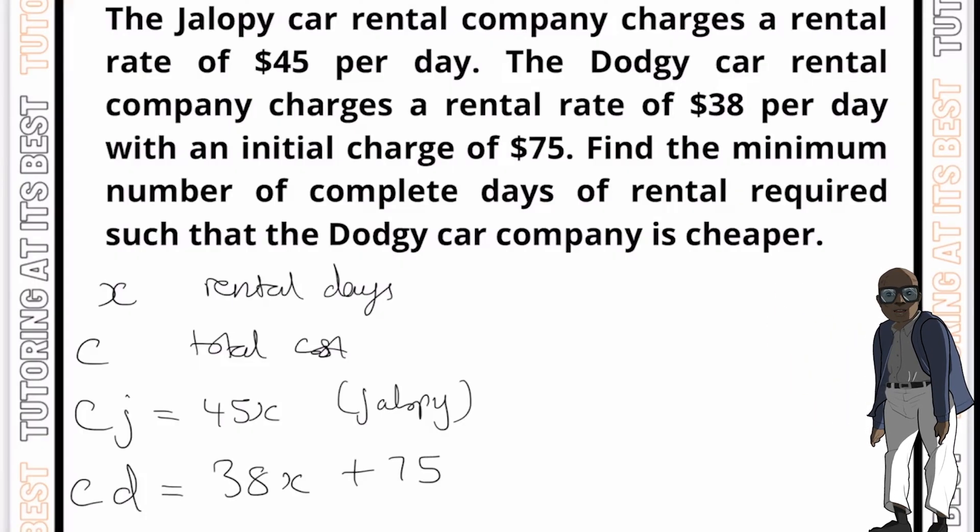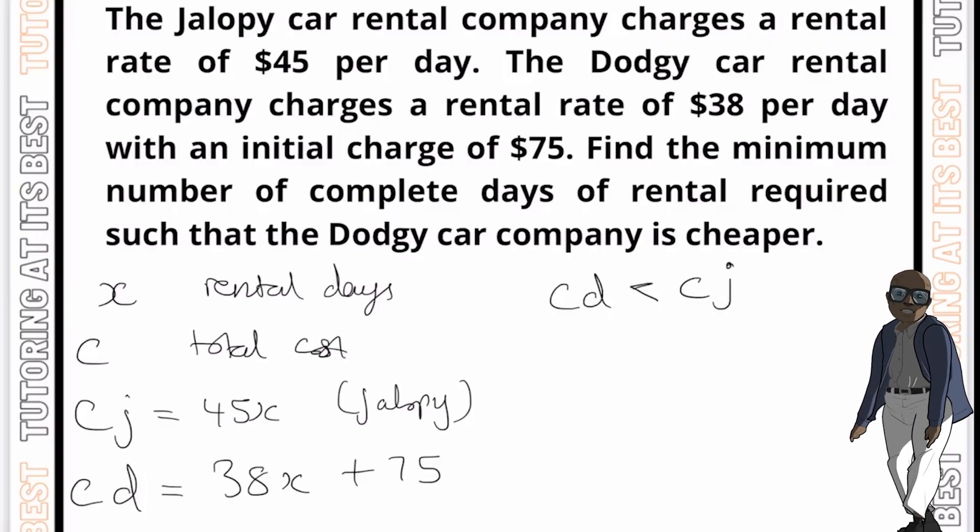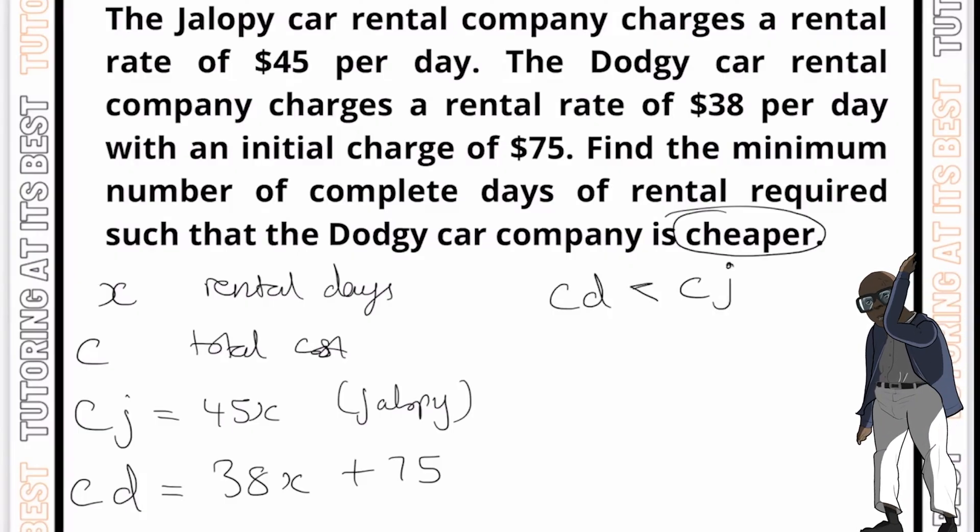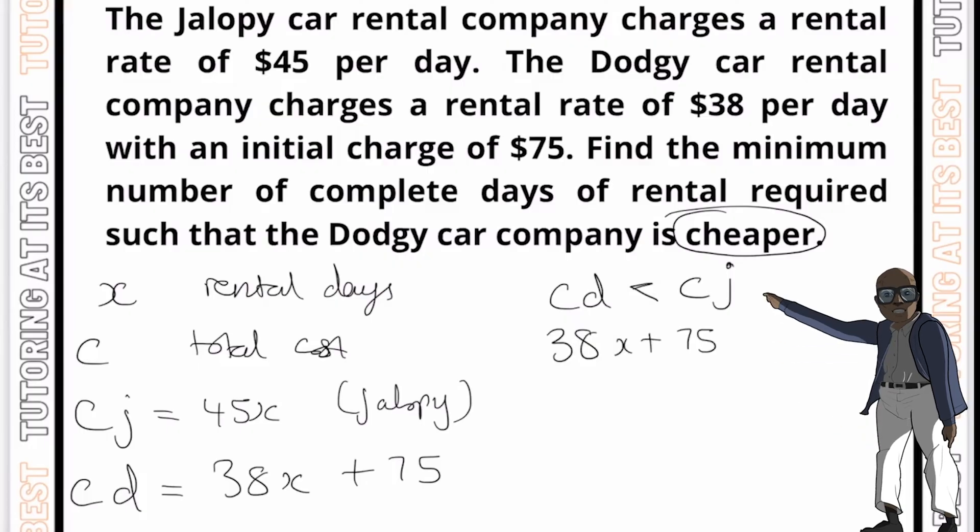And we want to find the minimum number of complete days of rental required such that the dodgy car company is cheaper. So in other words, we want to find the value of X that satisfies the inequality. So what should we do here? Well, let's represent this as CD is less than CJ. And remember, that's because we want it to be cheaper. So now if we substitute the expressions for this, we would get 38X plus 75 is less than 45X. And now if we go ahead and simplify the inequality, what are we left with?